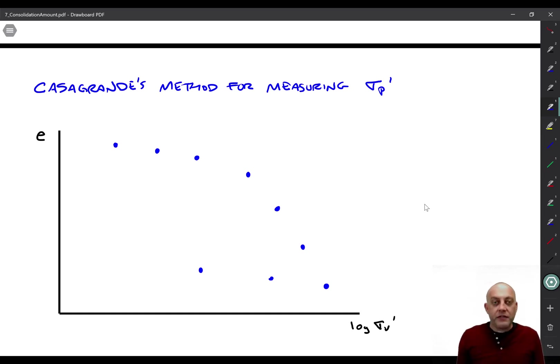In real life, it's not so simple, because there's sample disturbance, the soil doesn't perfectly conform to our expectation for how it should behave. So Casagrande developed a method for accounting for that fact, and finding what is sigma p prime based on imperfect laboratory test data. So we'll go through that now.